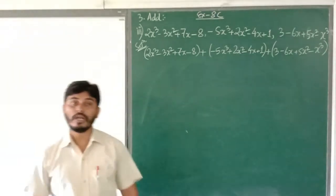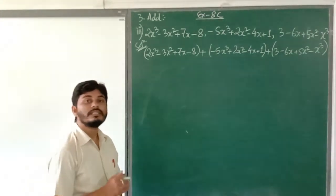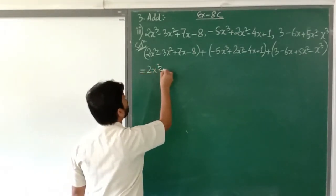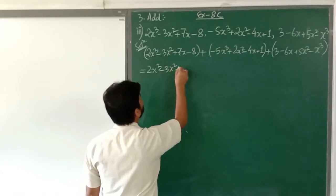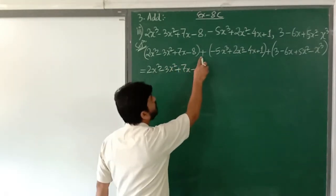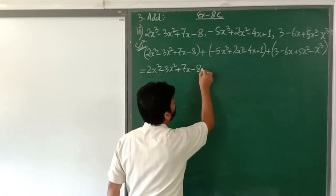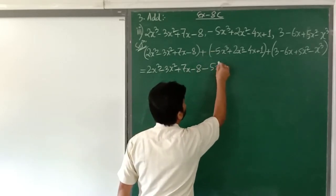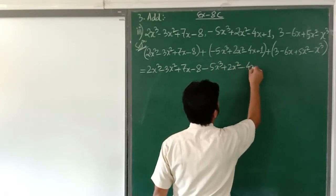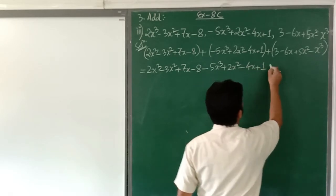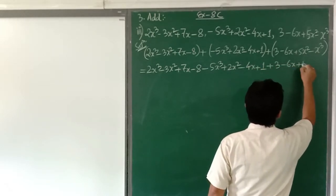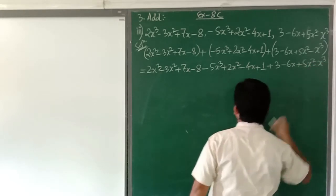Now we have to remove the bracket using the concept of sign operation. We get 2x³ minus 3x² plus 7x, then since plus and minus are multiplying it will be minus: minus 5x³ plus 2x² minus 4x plus 1, then plus 3 minus 6x plus 5x² minus x³.